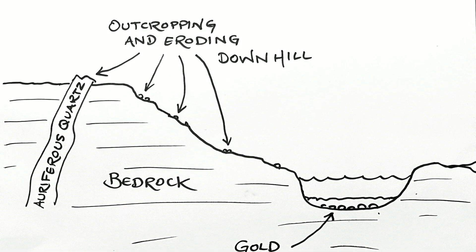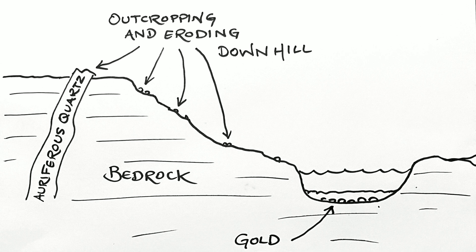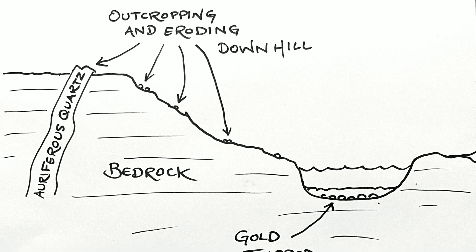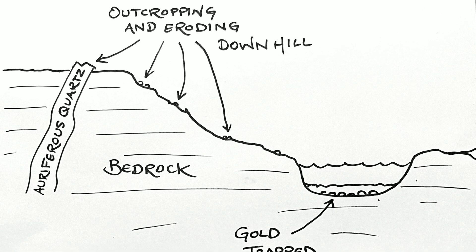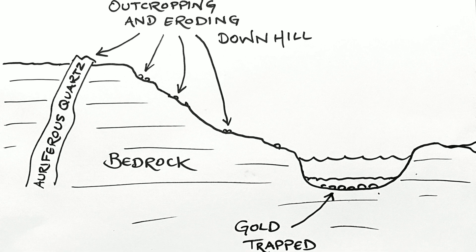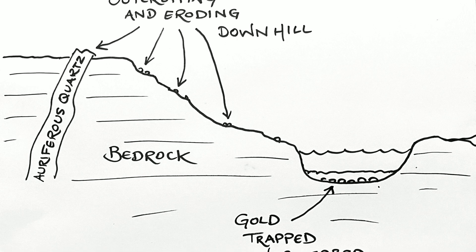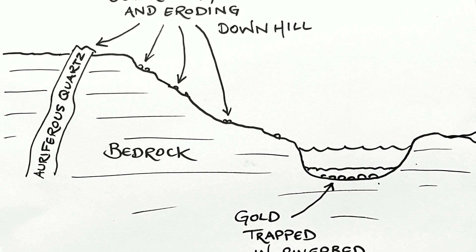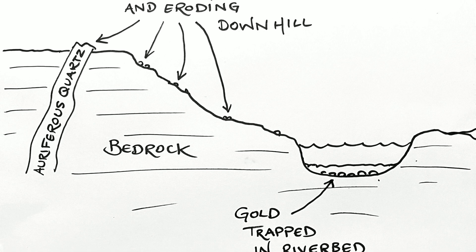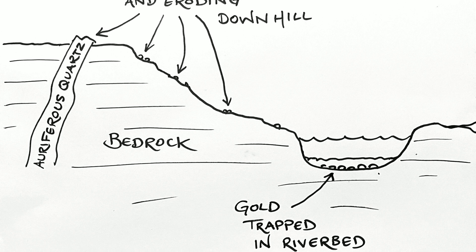Alluvial gold deposits are formed when gold is eroded from its source in a quartz reef and then transported by water and gravity to a new location. The gold makes its way downhill over time until it is eventually deposited into a river, stream or gully.